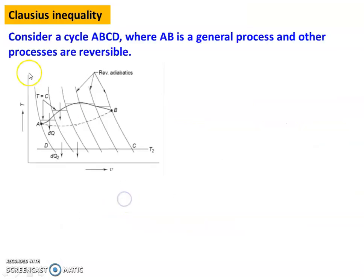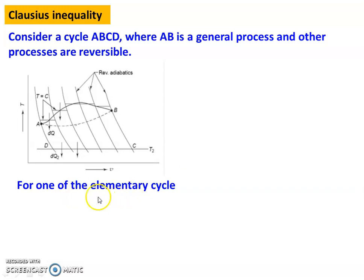Now, Clausius Inequality. Consider a cycle A-B-C-D in the temperature-entropy diagram. A-B is a general process — we do not know whether it is reversible or irreversible. The other processes B-C, C-D, and D-A are reversible. For one elementary cycle, the inclined line A-D is a reversible adiabatic process and B-C is a reversible adiabatic line, while C-D is a constant temperature line.